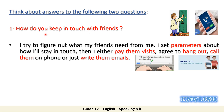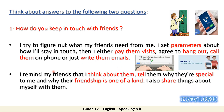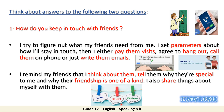Some of you may say: I try to figure out what my friends need from me, I set parameters about how I will keep in touch, then I either pay them visits, agree to hang out with them, call them on the phone, or write them emails. Some may add: I remind my friends that I think about them all the time, I tell them why they are special to me and why their friendship is one of a kind. I also share things about myself with them, like their comments, and follow them on social media.